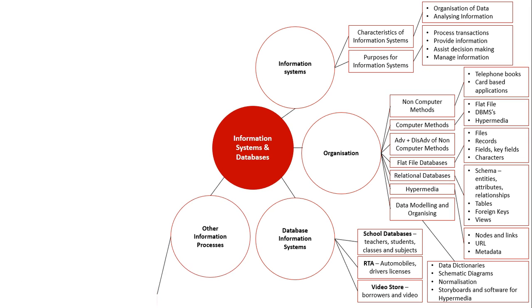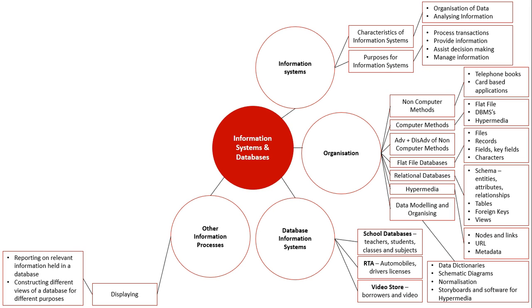The next part covers the other information processes, specifically displaying. Displaying is achieved through the different formats we can output data. One method is a database report — after running a query, results are displayed in a printable report format that can be given to a participant to follow up on. We also have form view for entering data and QBE (query by example) view for running queries.